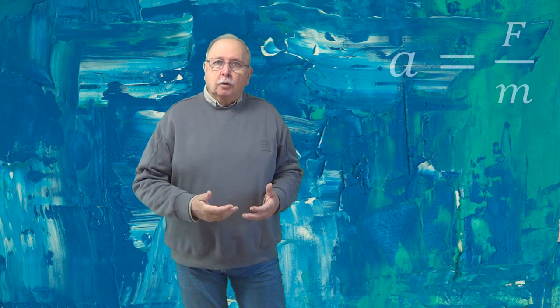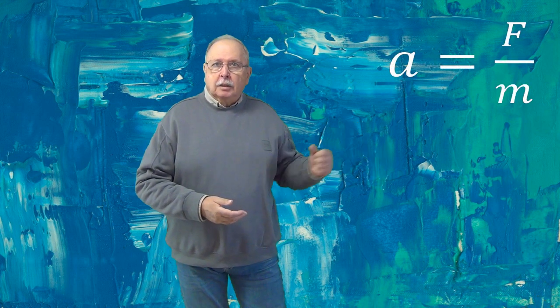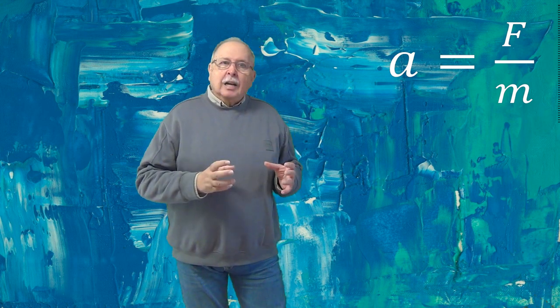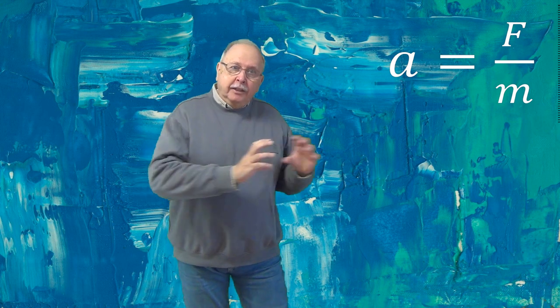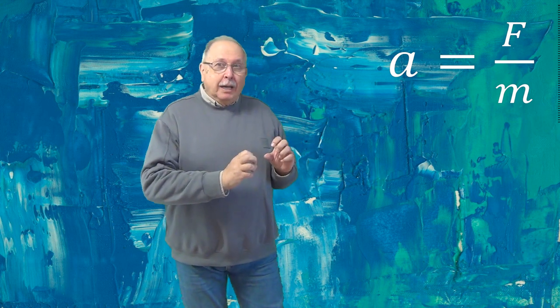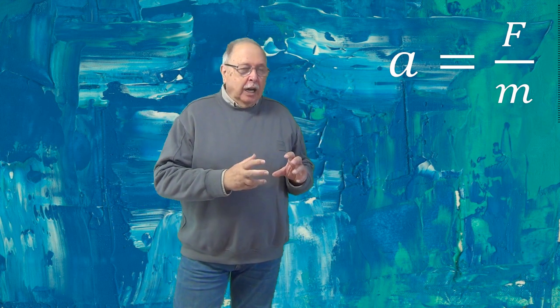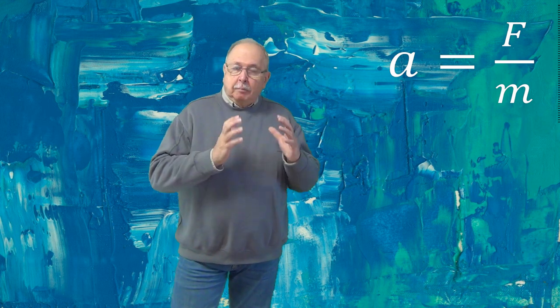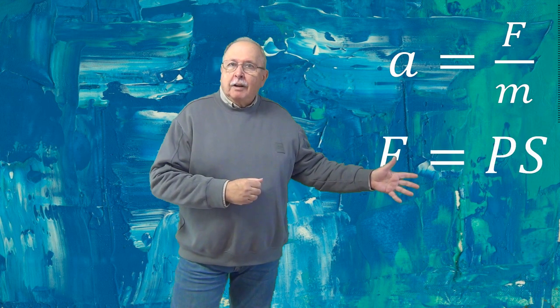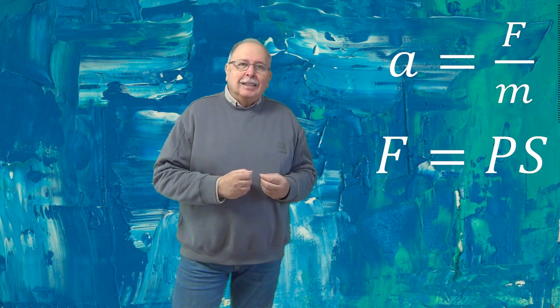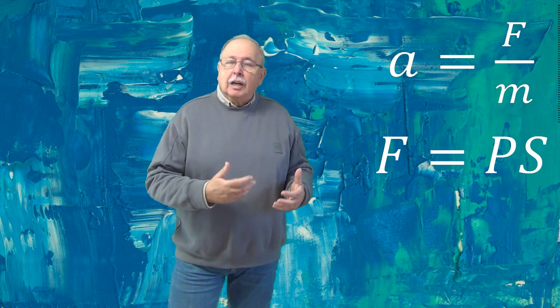Principiul fundamental al dinamicii spune că atunci când asupra unui corp acționează o forță, corpul capătă o accelerație direct proporțională cu forța, așa cum ne arată această formulă, și invers proporțională cu masa corpului. Forța care împinge aerul în vid, printr-un orificiu sau sub apă, apare din cauza presiunii aerului. Este deci o forță de presiune, care se calculează prin produsul dintre presiune și suprafața orificiului, așa cum vedeți în a doua formulă. Această formulă ne arată că forța este direct proporțională cu presiunea.